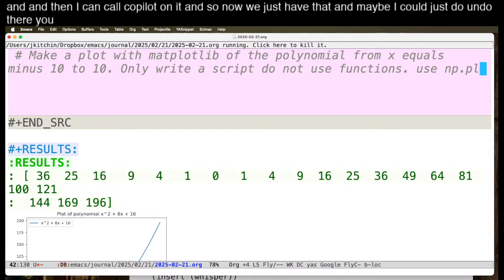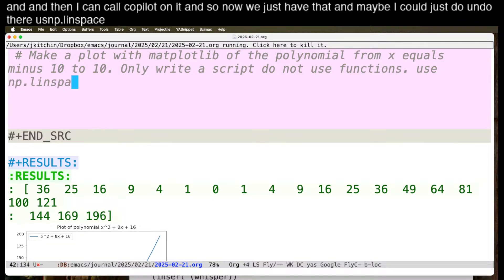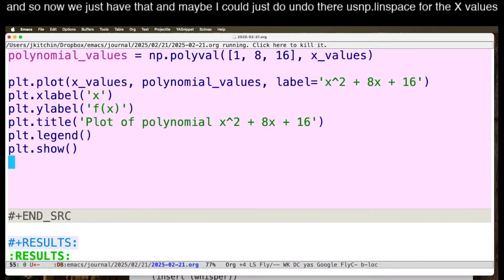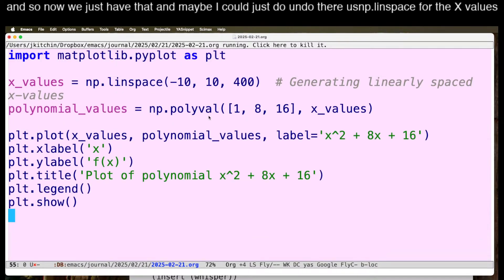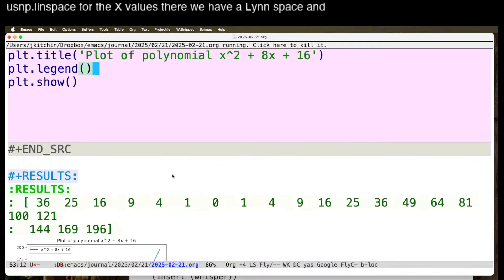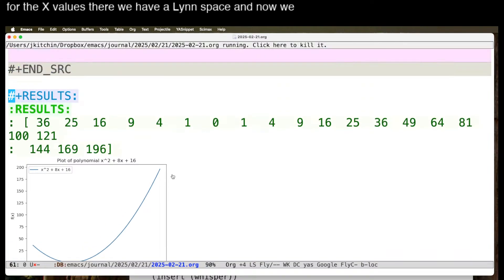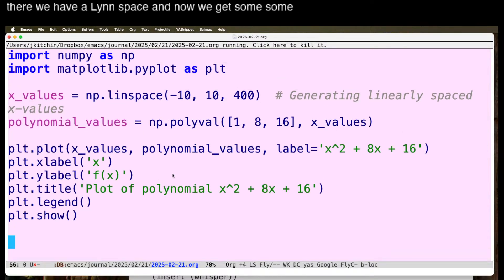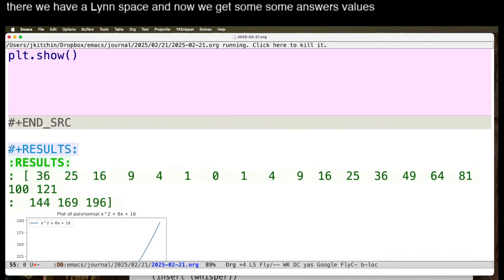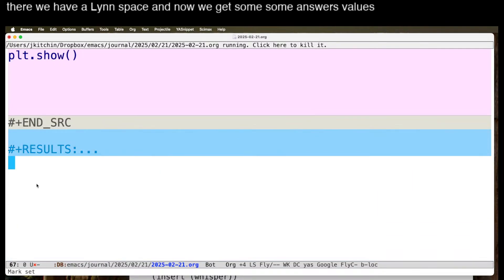And so now we just have that. And maybe I could just do undo there. Use np.linspace for the x values. There we have a linspace, and now we get some answers.